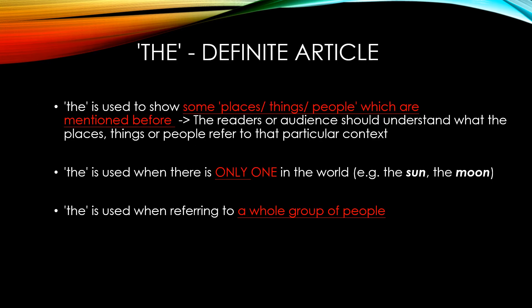The definite article 'The' is used to refer to specific places, things, or people which have been mentioned before, and the readers or audience should understand what they refer to in that particular context. The is used when there is only one in the world, like the sun and the moon. The is also used when referring to a whole group of people.